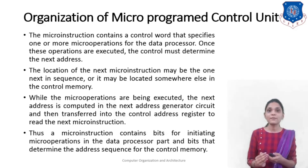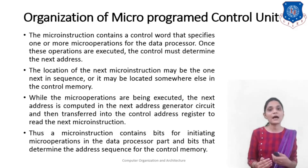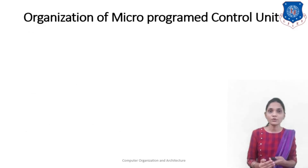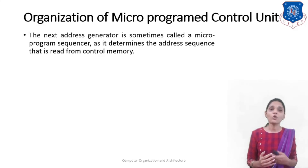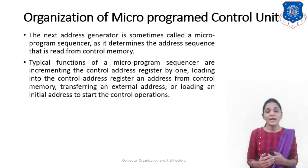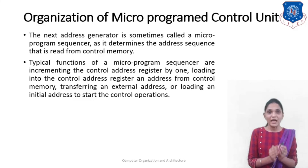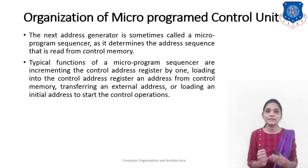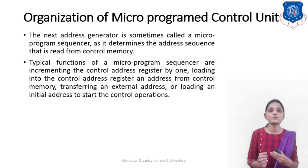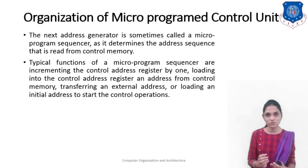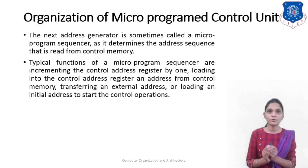The micro-instruction contains bits for initiating the micro-operations in the data processor part, and those bits are determined by the address sequence for the control memory. The next address generator is sometimes called the micro-program sequencer, as it determines the address sequence read from the control memory. Typical functions of a micro-program sequencer are: incrementing the control address register by one, loading into the control address register an address from the control memory, and transferring an external address or loading an initial address to start the control operation for the next instruction.